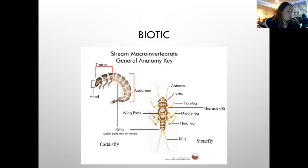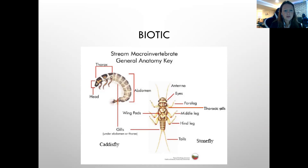This anatomy key image shows the different parts of a macroinvertebrate: thorax, head, abdomen, gill location, eyes, antennae, legs, and tails. Use this as you practice going through the dichotomous key so you know where to look for each feature.